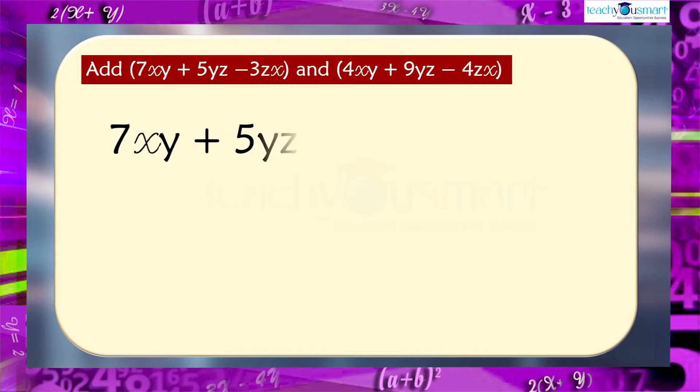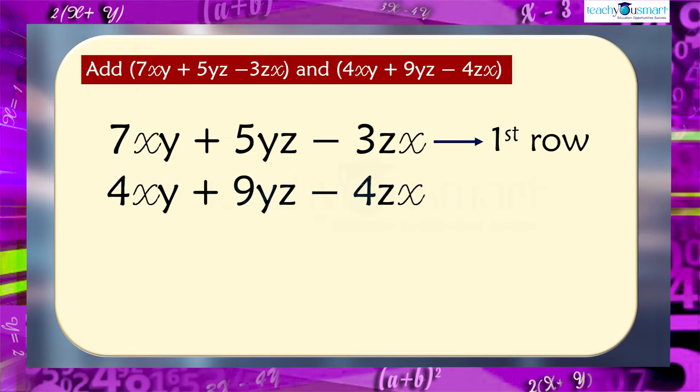Write 7xy plus 5yz minus 3zx as in the first row and 4xy plus 9yz minus 4zx as in the second row. But we know that only like terms can be added. So when we arrange it, each like terms should be placed one below the other.